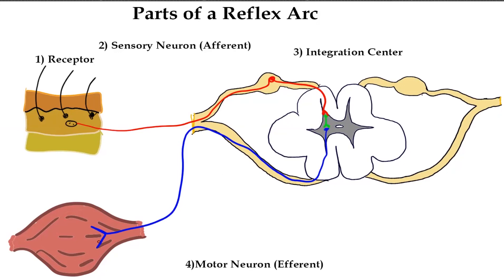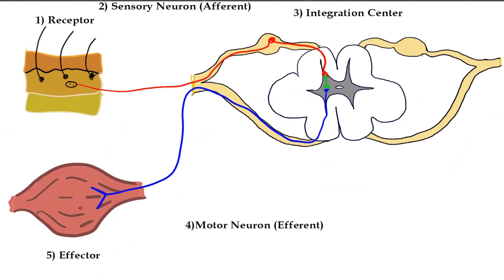This brings us to the fifth and final step of the reflex arc, which is an effector. Here my effector is a muscle. The effector is what is responding to the stimulus that was created — here the effector is a muscle and it would probably cause contraction in this situation. So one more time, step-by-step: you have a receptor that is stimulated, passes information down a sensory neuron (also known as the afferent), enters the integration center where information is passed from sensory to motor in multiple possible ways. Then the information travels out the spinal cord through the motor neuron (also known as the efferent), and that eventually reaches an effector where you have a response.